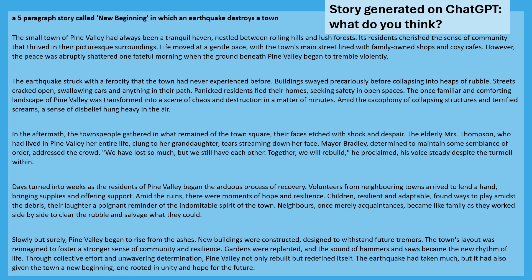Here is a story generated on ChatGPT. My search term was a five paragraph story called New Beginning in which an earthquake destroys a town. The small town of Pine Valley had always been a tranquil haven nestled between rolling hills and lush forests. Its residents cherished the sense of community that thrived in their picturesque surroundings. Life moved at a gentle pace, with the town's main street lined with family-owned shops and cosy cafes. However, the peace was abruptly shattered one fateful morning when the ground beneath Pine Valley began to tremble violently. The earthquake struck with a ferocity that the town had never experienced before. Buildings swayed precariously before collapsing into heaps of rubble. Streets cracked open, swallowing cars and anything in their path. Panicked residents fled their homes seeking safety in open spaces. The once familiar and comforting landscape of Pine Valley was transformed into a scene of chaos and destruction in a matter of minutes.